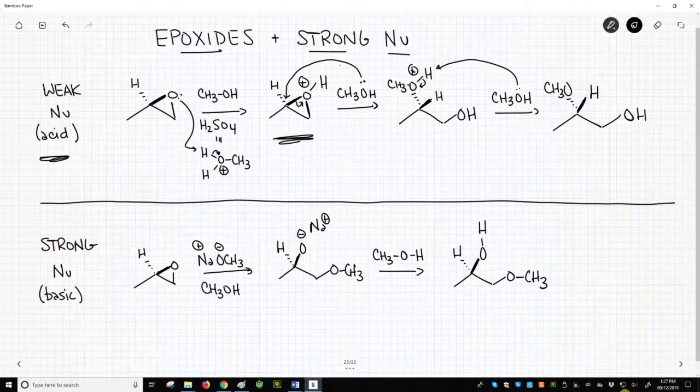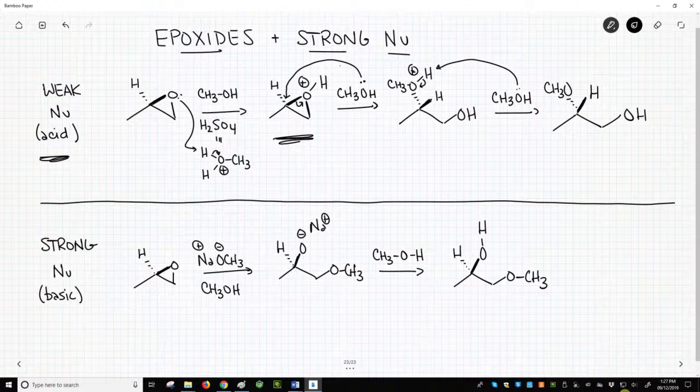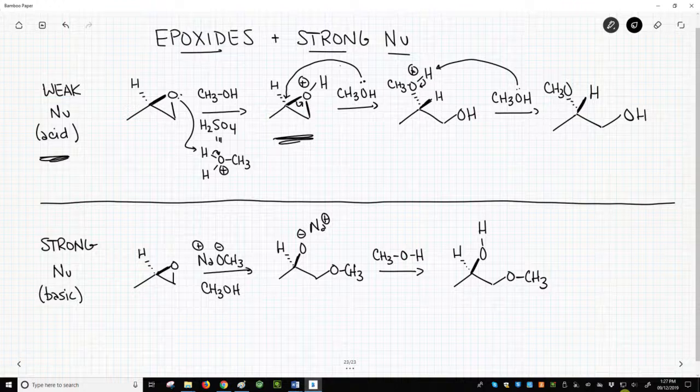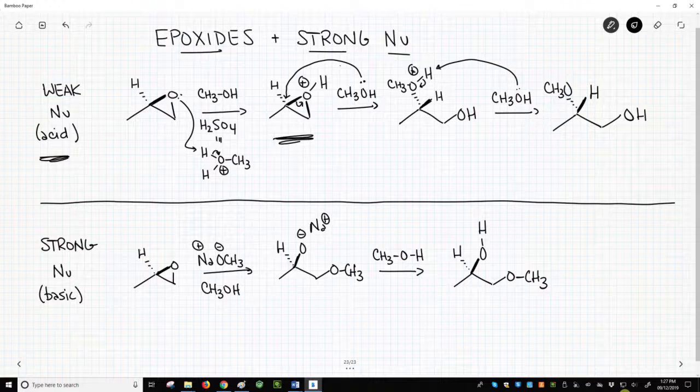The positive charge then makes the epoxide more electrophilic and attracts the weak nucleophile, which attacks at the more hindered side of the epoxide. We also get inversion of stereochemistry at the attacked carbon.